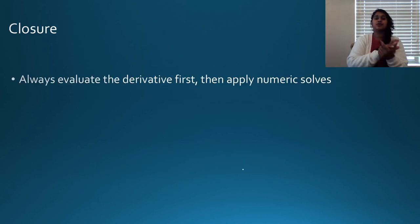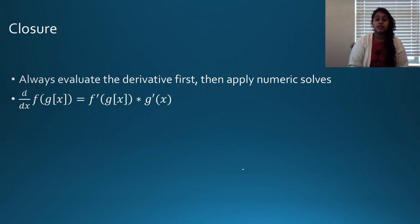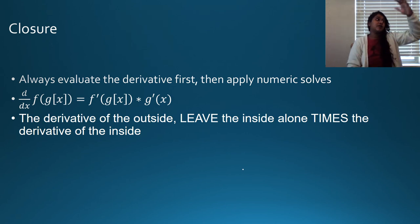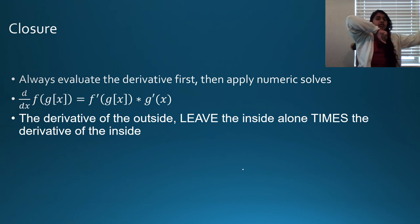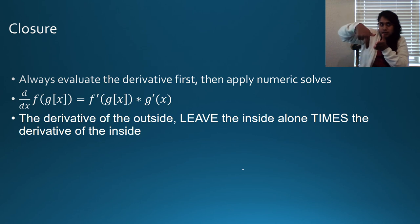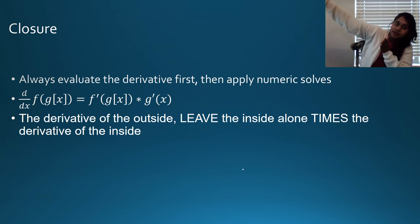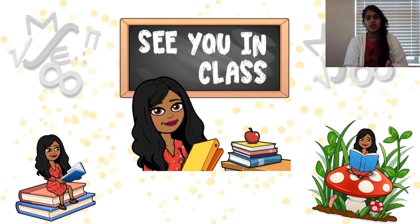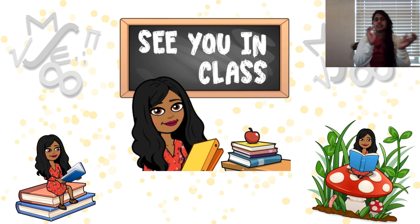Some closure: always evaluate your derivative first, then apply numeric solves. Know the phrase: derivative of the outside, leave your inside alone, times the derivative of the inside. For a double chain rule, take the derivative of the outermost outside — leave the entire inside alone — then multiply by the derivative of the inner outside, leave the inner inside alone, times the derivative of the inner inside. Know the concepts more than anything else. See you in class.